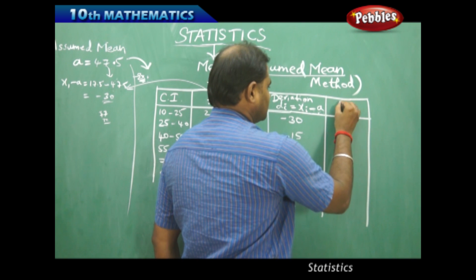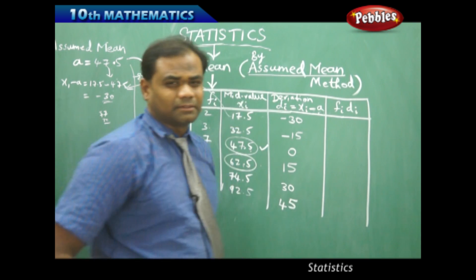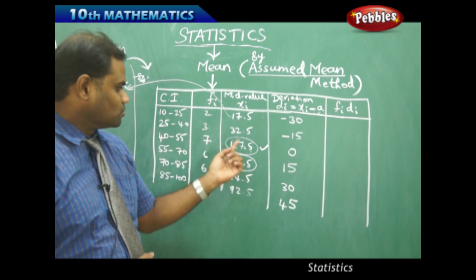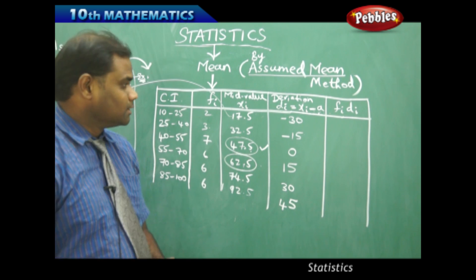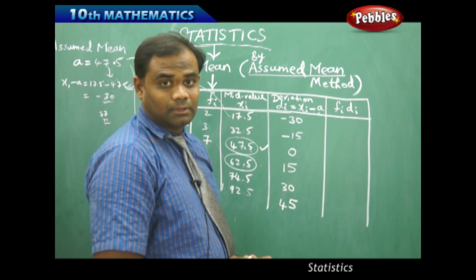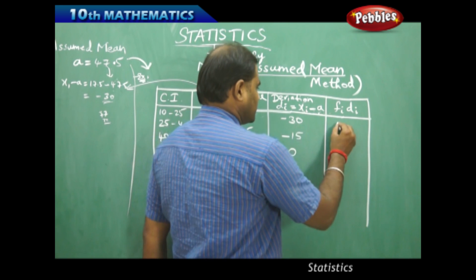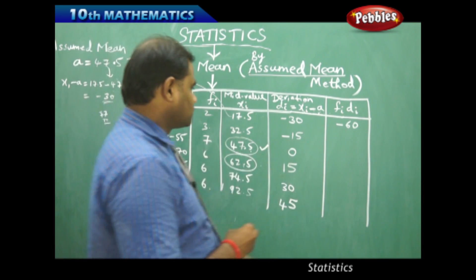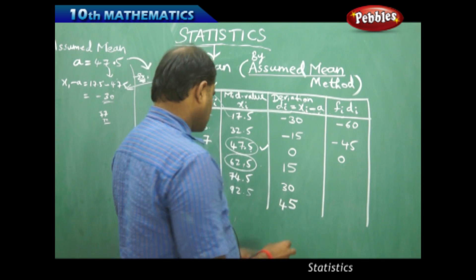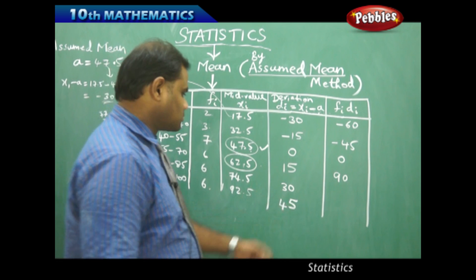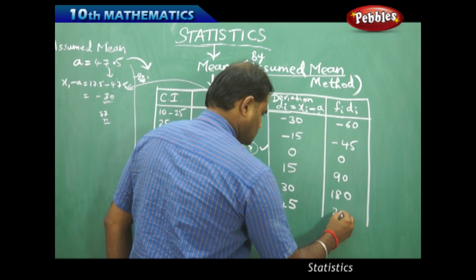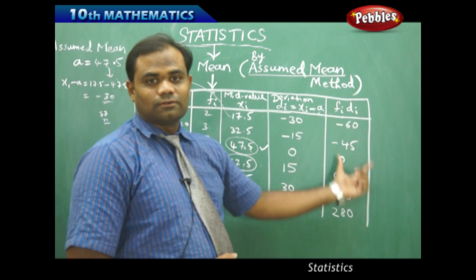The next column to calculate is fi·di, where fi comes from the frequency column and di from the deviation column. Multiplying: 2 × (−30) = −60, 3 × (−15) = −45, 7 × 0 = 0, 6 × 15 = 90, 6 × 30 = 180, and 6 × 45 = 270. These give us the fi·di values for each row.